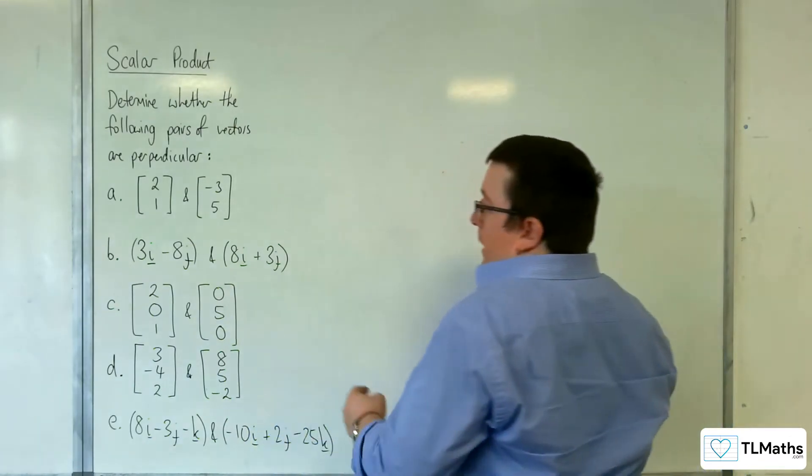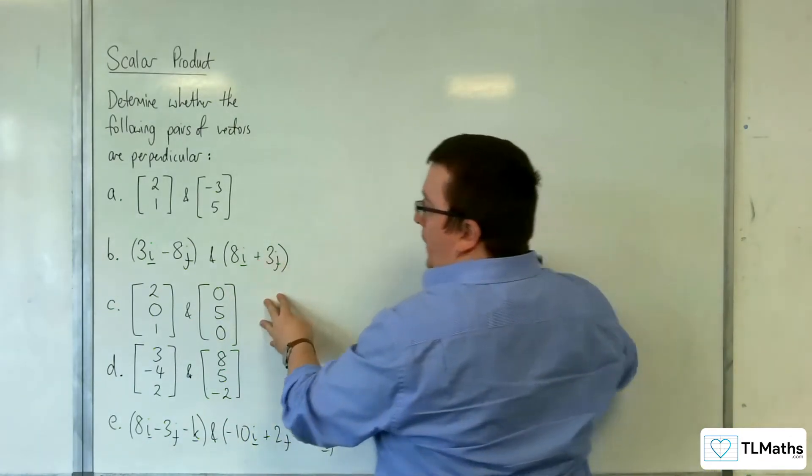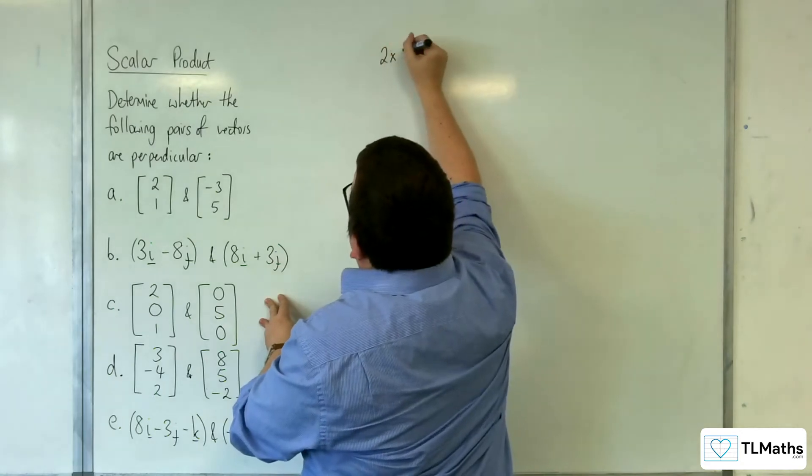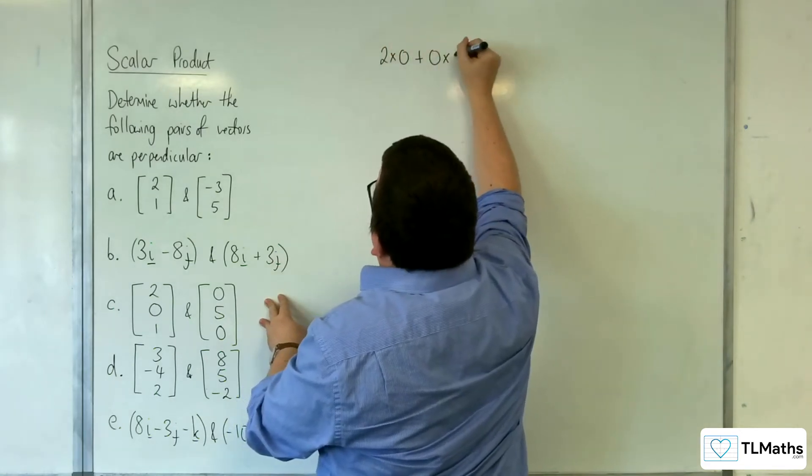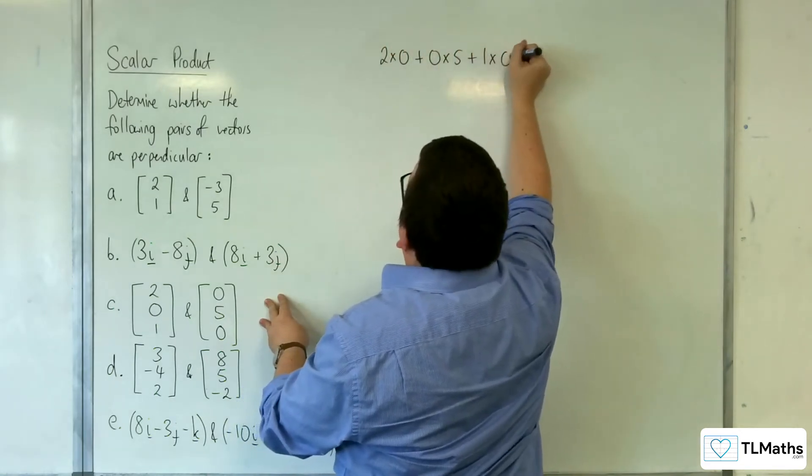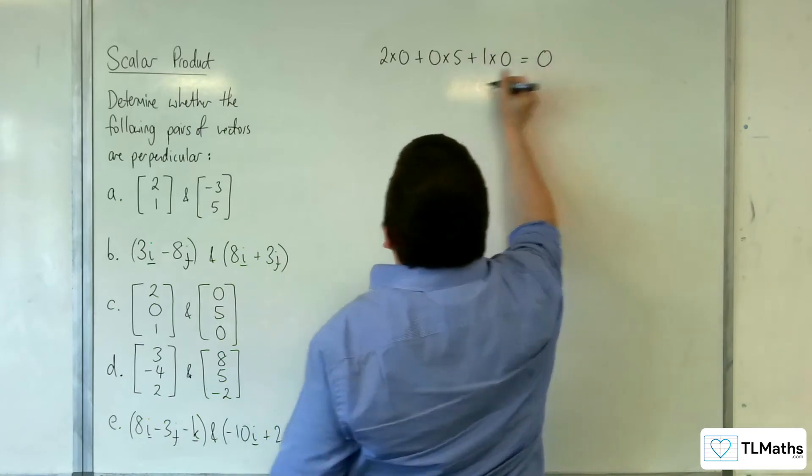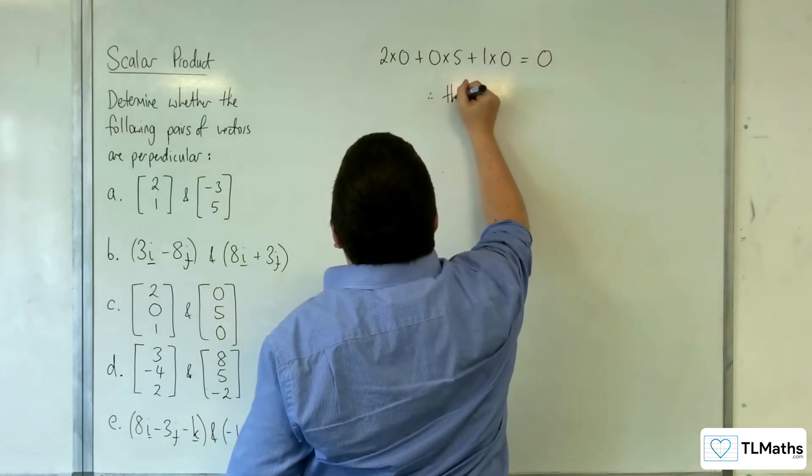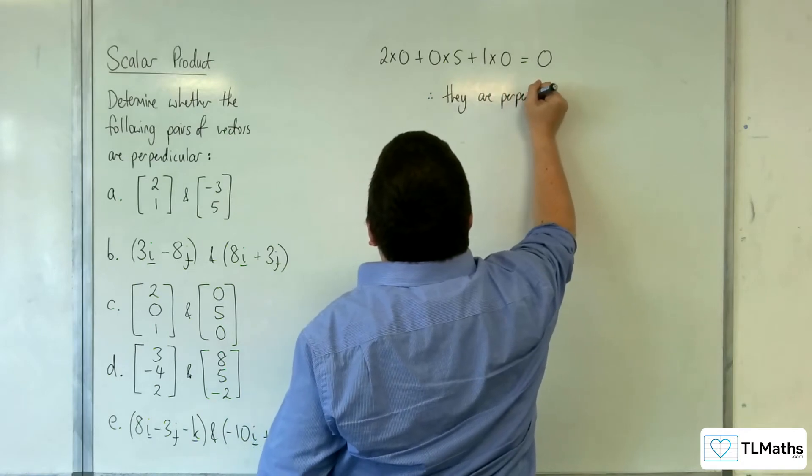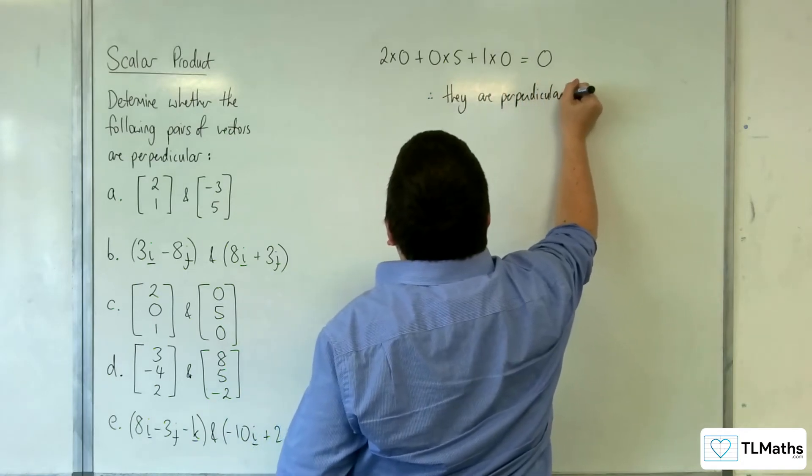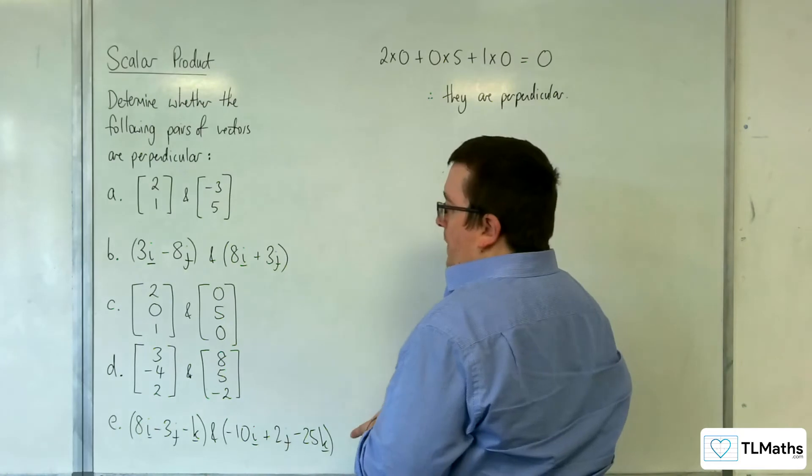OK, now we're going to 3D vectors. So for C, we've got 2 times 0 plus 0 times 5 plus 1 times 0 is equal to 0. Therefore, they are perpendicular. OK, nice, easy one, that one.